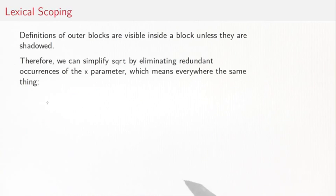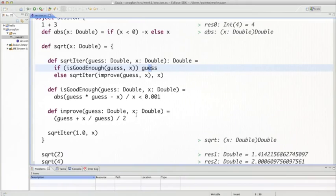So we've seen that definitions of outer scopes are visible inside a block unless they're shadowed. We can use that to simplify square root by eliminating redundant occurrences of the x parameter, which means everywhere the same thing. So what you see here in the worksheet is that the x parameter that comes into square root is duplicated here, here and here. But it's never changed. It's always passed as it is before.